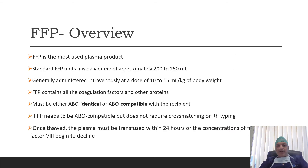After RBC transfusion, now coming to plasma. Out of all categories of plasma, FFP or fresh frozen plasma is the most used plasma product. The standard unit of FFP contains a volume of approximately 200 to 250 ml, and usually it is administered at a dose of 10 to 15 ml per kg of body weight. It contains all the coagulation factors, and plasma must be either ABO identical or ABO compatible with the recipient.